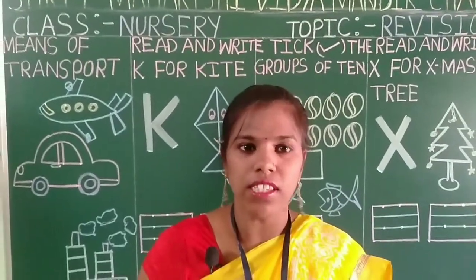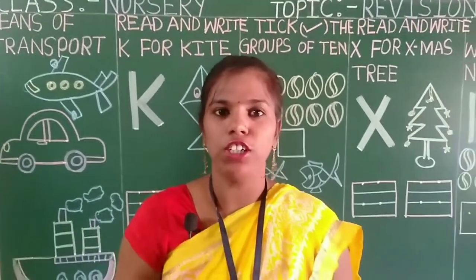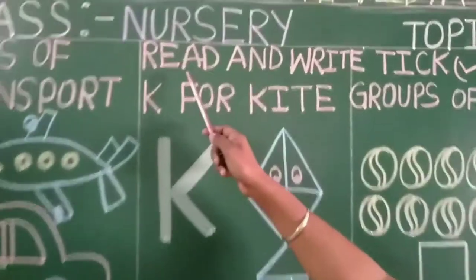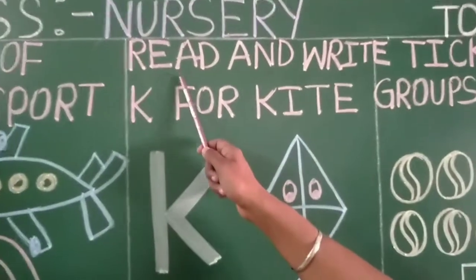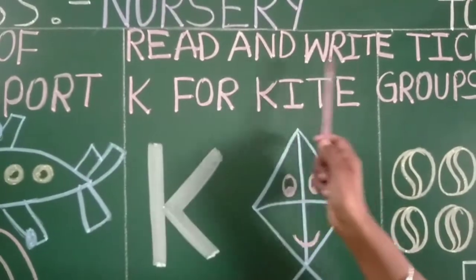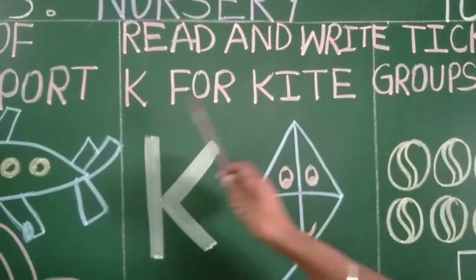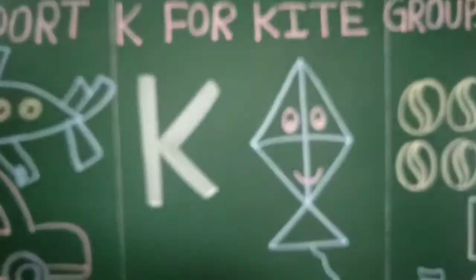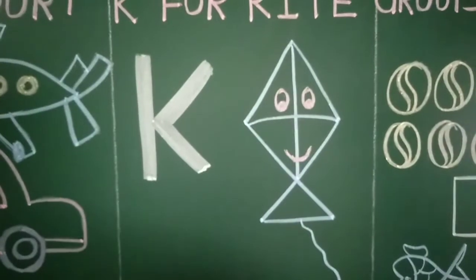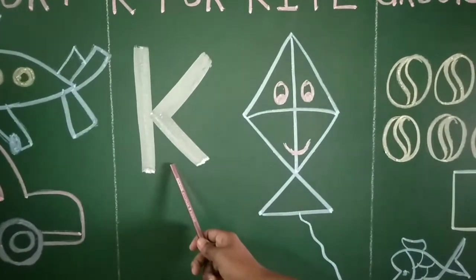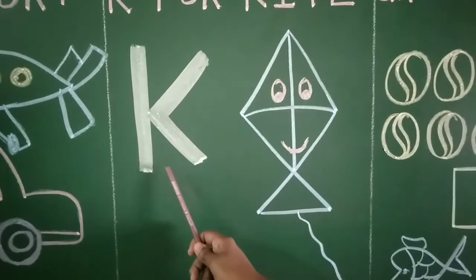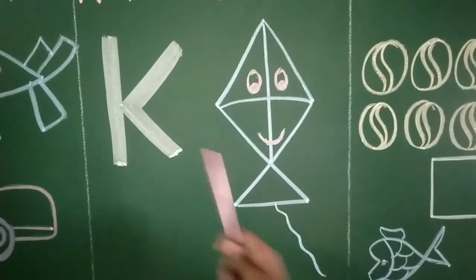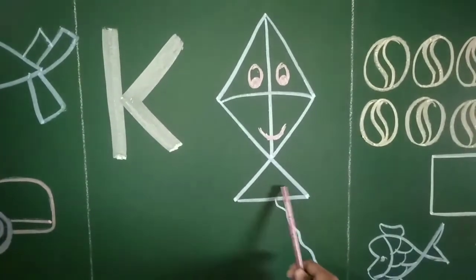Now we will see what teacher taught you in English. Teacher taught you to read and write K for kite. Okay students, read and write letter K for kite. Which letter? K. K for kite.